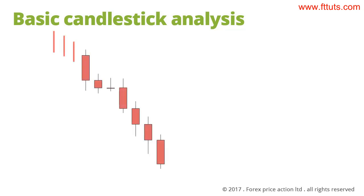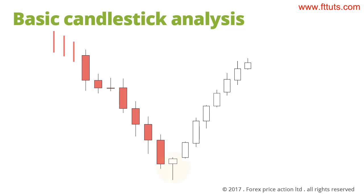We started with a nice strong bearish trend — sellers had control of price and drove it down for 10 candles. Then all of a sudden, sellers started losing control; they can no longer push price down. Buyers start fighting back. These candles indicate that this trend might end right here. If buyers gain control, they can reverse price. However, sellers can also regain control and continue pushing price down. In this case, price did in fact reverse. After this short period of indecision, sellers lost control, buyers gained control and started pushing price up, and a reversal occurred.